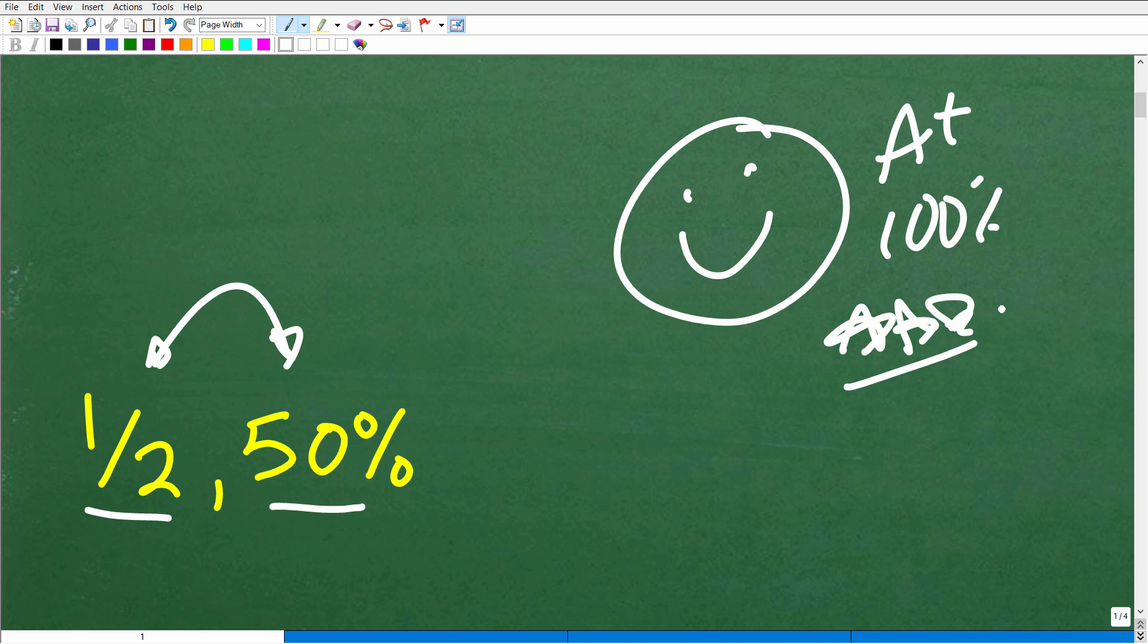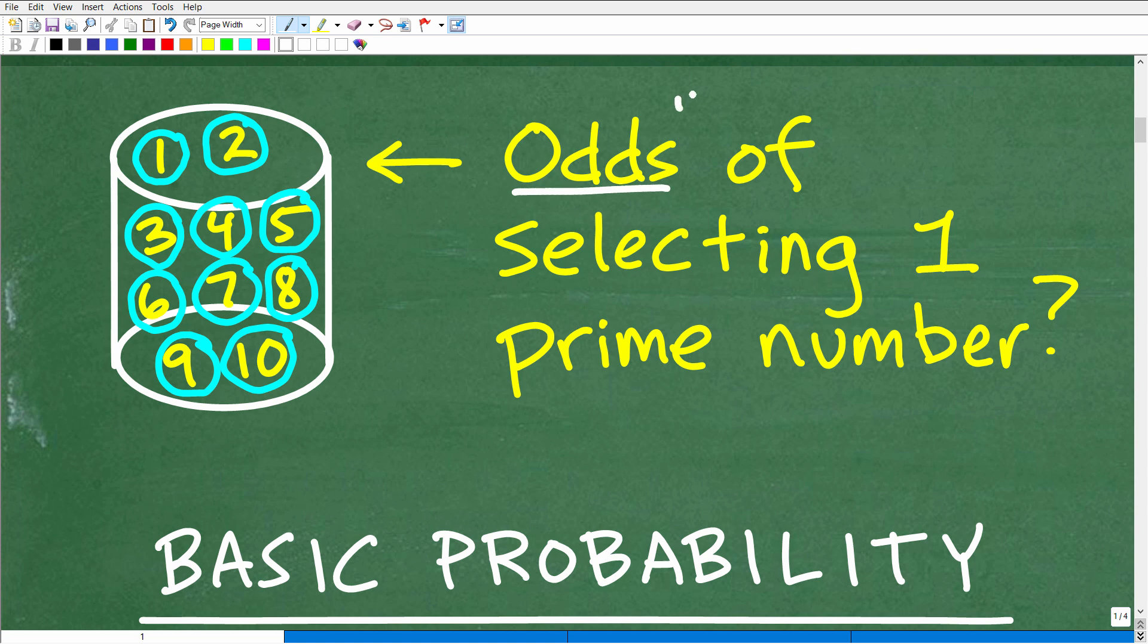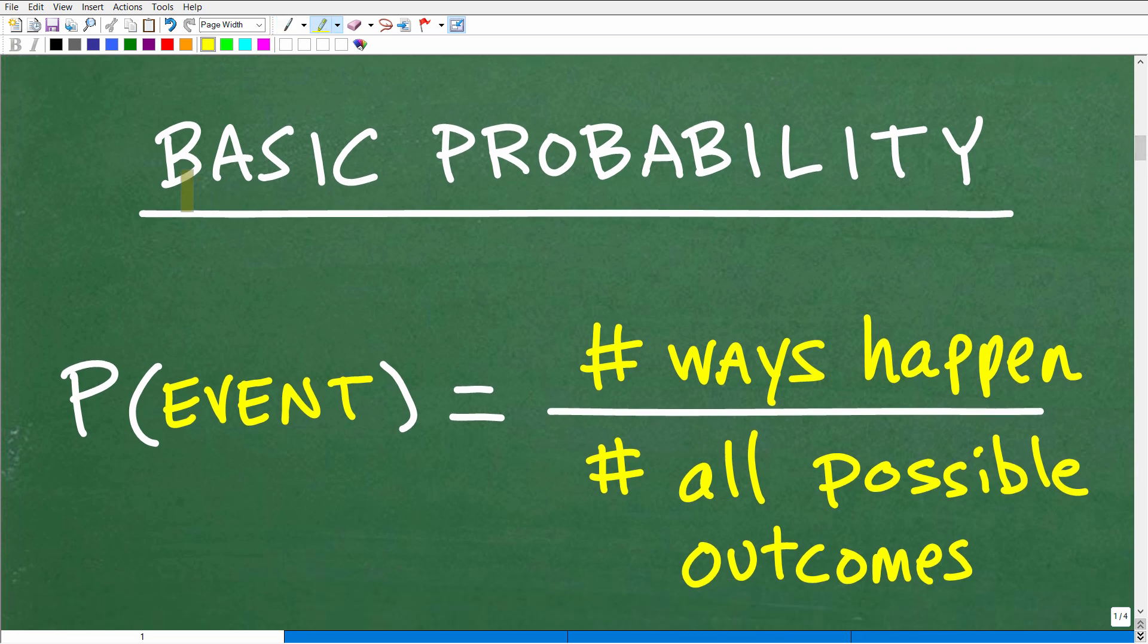Now, you might have even more than a basic understanding of probability, but probability is a big topic. So what we need to understand in this particular problem is what is probability, because that's what the word odds here means. What's the odds or the chances of something happening? Well, we need to be thinking about probability.